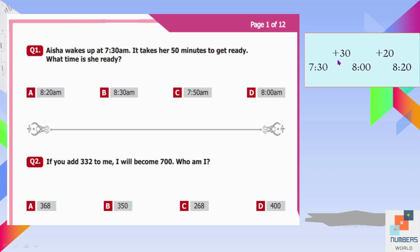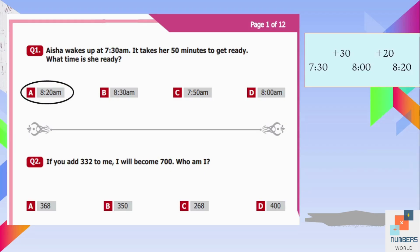So 7:30 plus 30 equals 8 o'clock, and 8 o'clock plus 20 equals 8:20. So her ready time will be 8:20 AM. A is our answer.